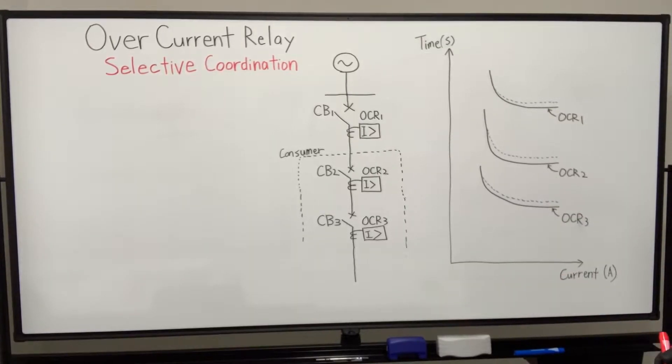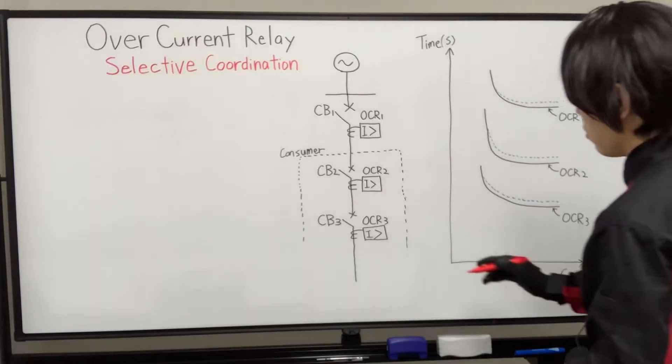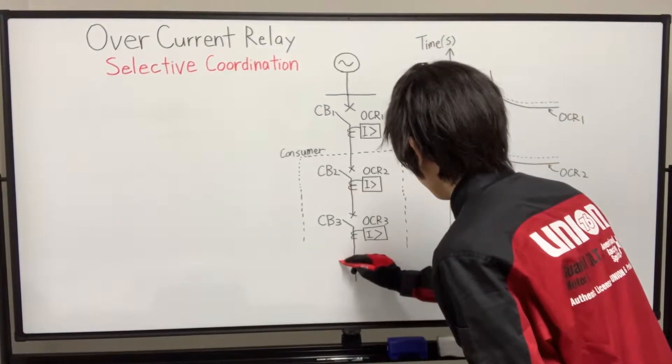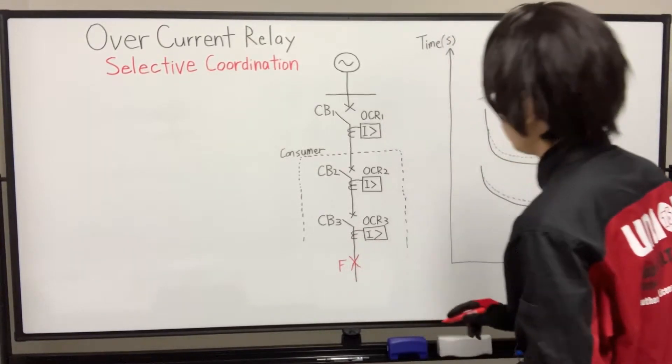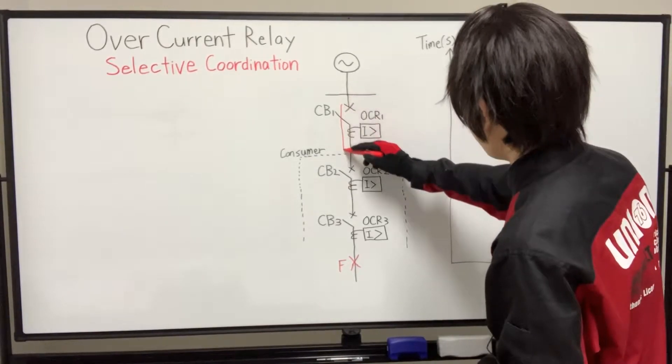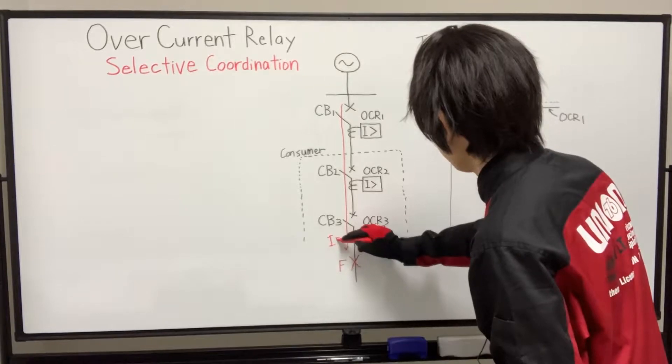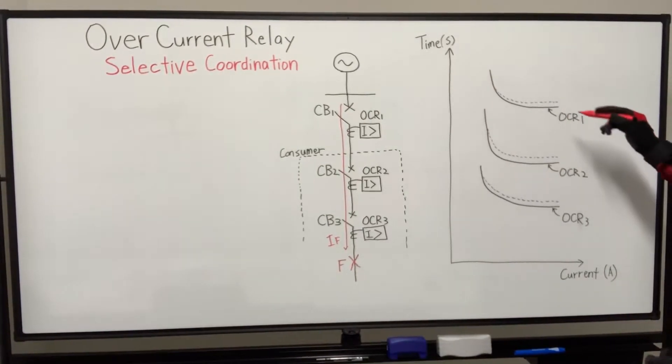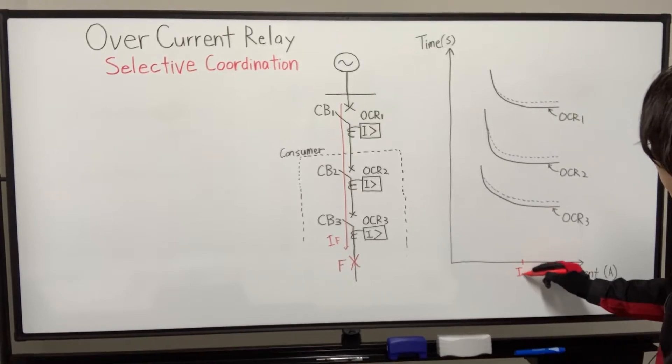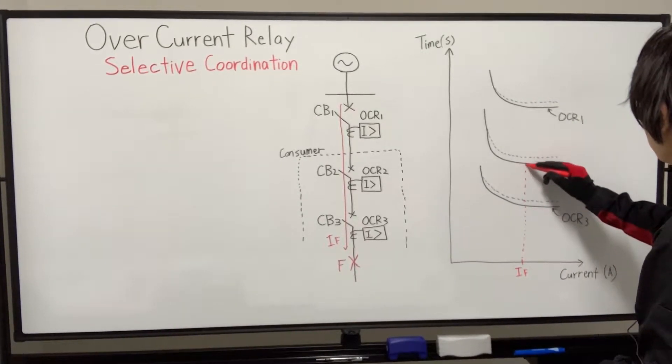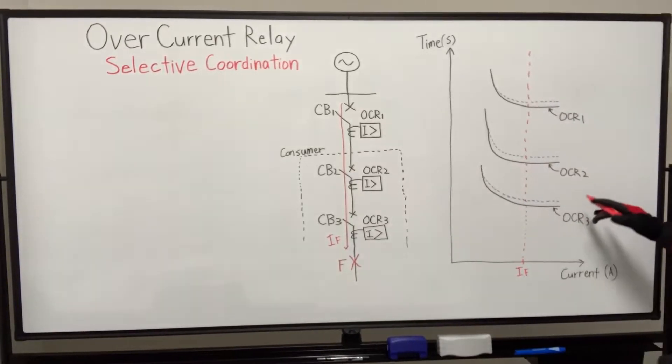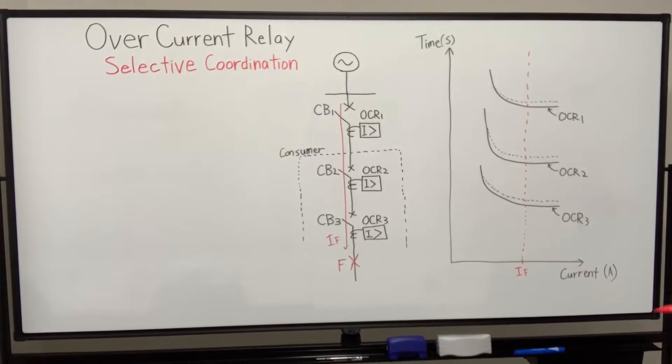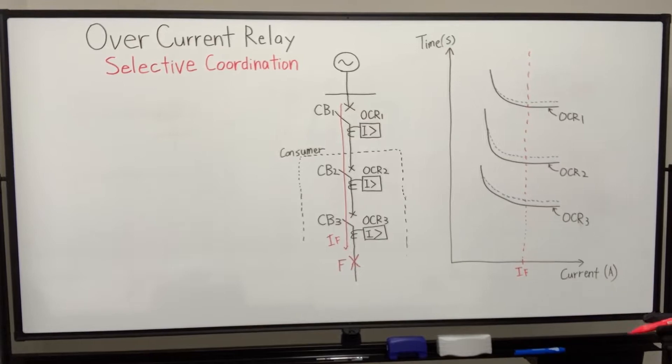This is a diagram that represents the selective coordination of overcurrent relay. So if a fault occurs at this point F in this power system, fault current is passing through here between circuit breaker 1 to circuit breaker 3. According to this time-current characteristic, only circuit breaker 3 will trip and clear the fault by interrupting the circuit.